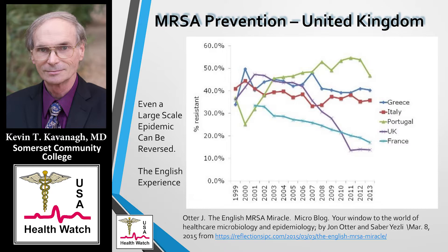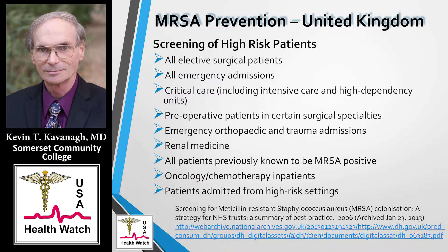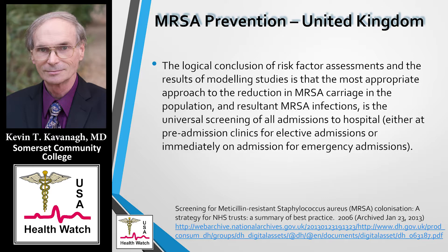Who does the United Kingdom screen? They don't do universal screening, but they come close: all elective surgical patients, all emergency admissions, critical care and ICU step-down unit admissions, preoperative patients, emergency orthopedic and trauma patients, oncology and chemotherapy patients, and patients admitted from high-risk settings. When you tally all these patients, as the UK's National Health Service protocols note, the logical result is just to screen everybody — it's simply easier.